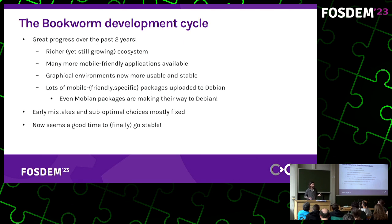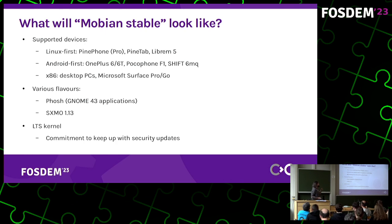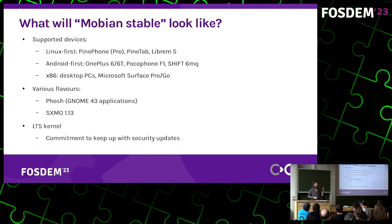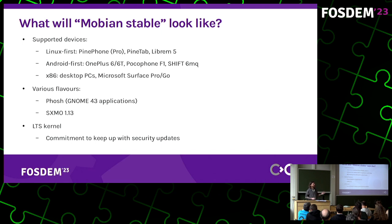Now seems a good time to finally go stable. We'll support the devices we already support: the Linux-first phones — PinePhone, PinePhone Pro, and the Librem 5 — as well as some Qualcomm-based devices, mostly SDM845, thanks to awesome community work on the kernel. We also ship x86 images with or without non-free firmware, running fine on devices like the Microsoft Surface Pro and Surface Go tablets. We'll ship two flavors of Mobian: one with Phosh and one with SXMO.